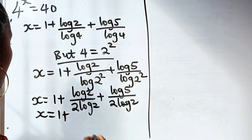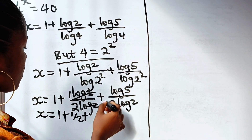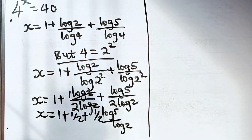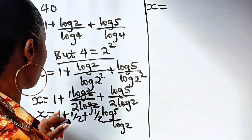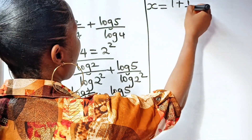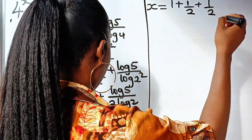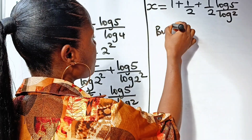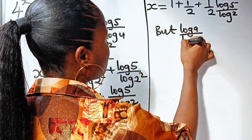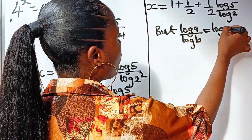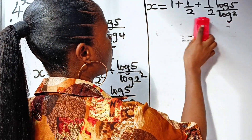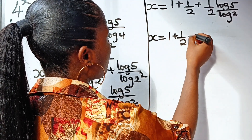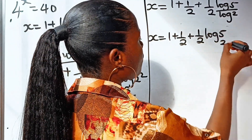So we have x is equal to 1 plus — now log 2 divides itself, and we are left with half, plus half times log 5 over log 2. Note that log A divided by log B is equal to log A base B. So we can write x is equal to 1 plus one-half plus one-half multiplied by log 5 base 2.